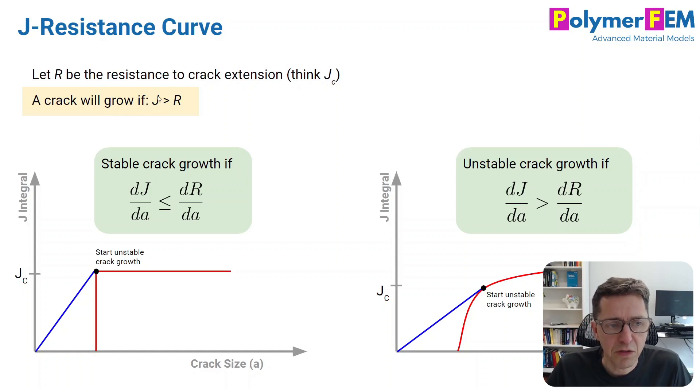Here's the condition for crack growth. If we take the derivative of this equation with respect to crack length, so dJ/da, and compare that to dR/da. If dJ/da is less than the resistance change with crack size, then it's stable crack growth. The opposite is if dJ/da is larger than dR/da, then it's unstable crack growth.